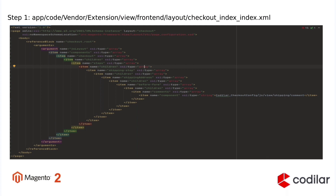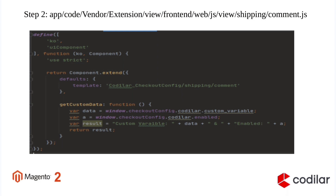Our checkout_index_index.xml file looks as follows. Here we will reference a reference block — that is checkout.root — and we will define our component. The component is Codilla/CheckoutConfig/js/view/shipping/component. Then we will create a component.js file under app/code/vendor/extension/view/frontend/web/js/shipping directory.